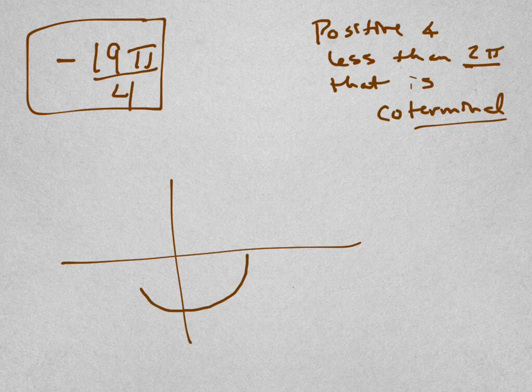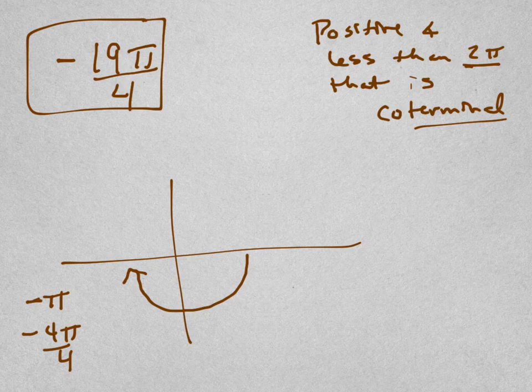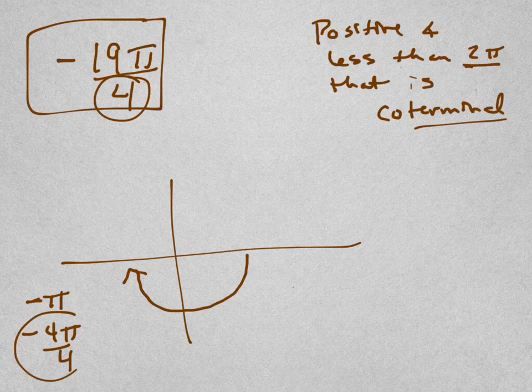Going this way is negative, going backward. So this would be, remember that's negative π, right? Going that way is negative π, which is really like negative 4π over 4, because I've got fourths that I'm looking at. So 1π is the same as 4π over 4, right?